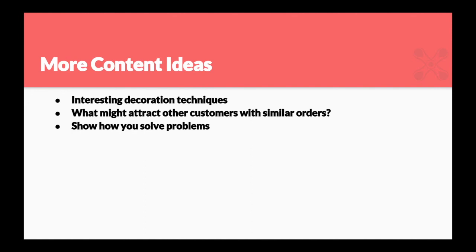Show how you solve problems. How do you embroider a logo over the center seam of a five-panel baseball hat without it looking weird? How do you do embroidery with tiny type? How do you print over a hoodie zipper? How do you print on polyester performance fabric without dye migration? These are super common problems people struggle with. Are you doing 100 drop ships for a company going all over the US? Take pictures of you putting shirts in boxes with all the boxes lined up — that's a hugely powerful image.